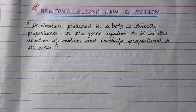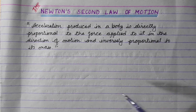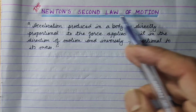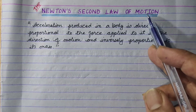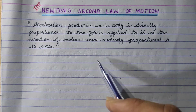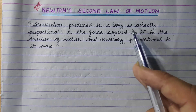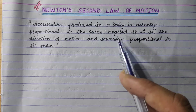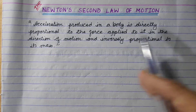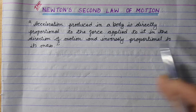Hi everyone. This is the first chapter on Newton's Second Law of Motion. Acceleration produced in a body is directly proportional to the force applied to it in the direction of motion, and inversely proportional to its mass.